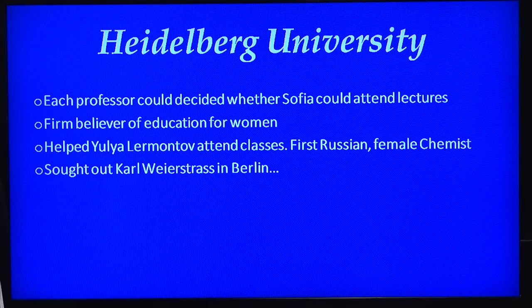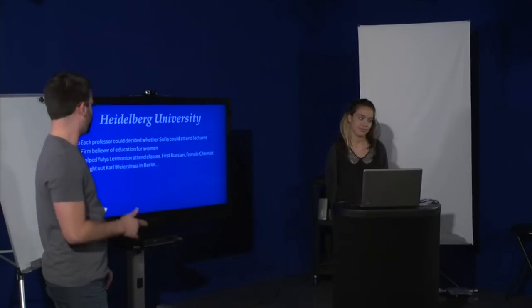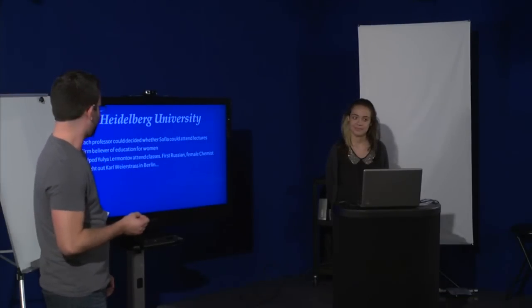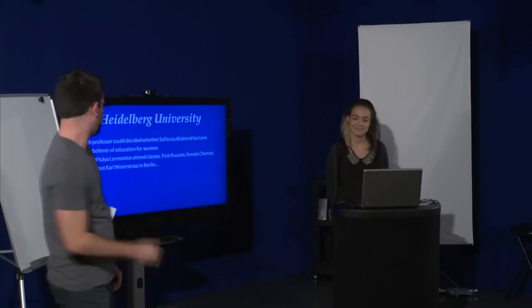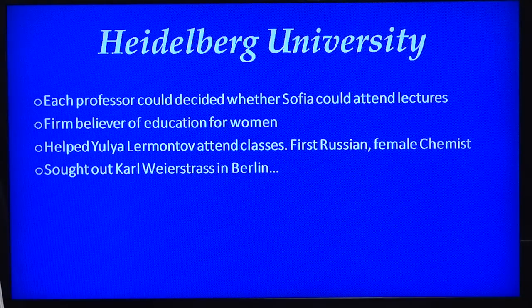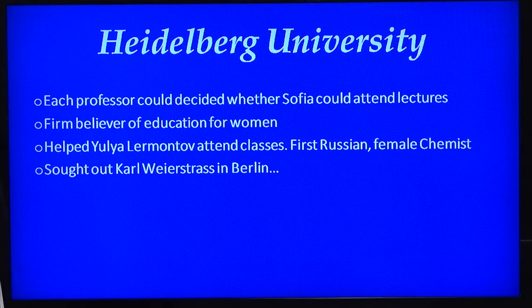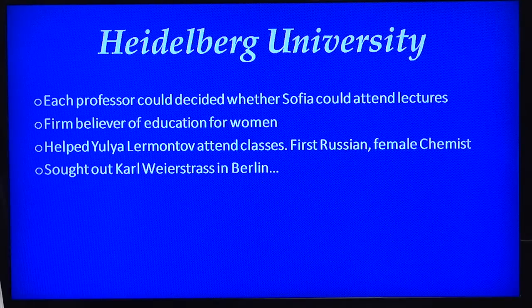And despite all these great accomplishments, you know, people were still looking down upon her. The president of the university was actually very upset with her. As he was led to believe that she tricked the faculty into letting Lermontova use the all-male chemistry lab at the time. And after her studies, she eventually wanted to further advance them. And decided to seek out Carl Weierstrass, in Berlin.